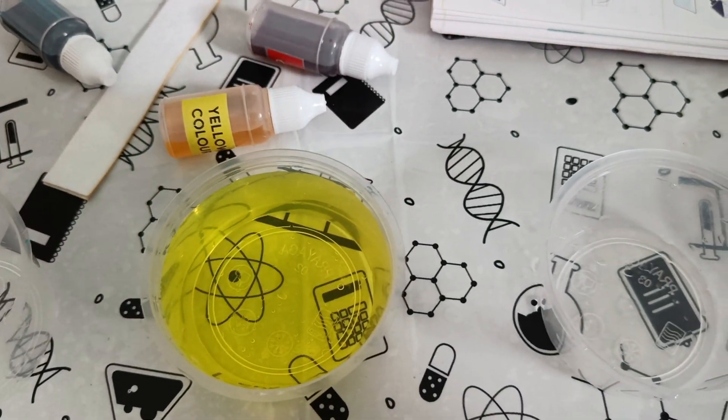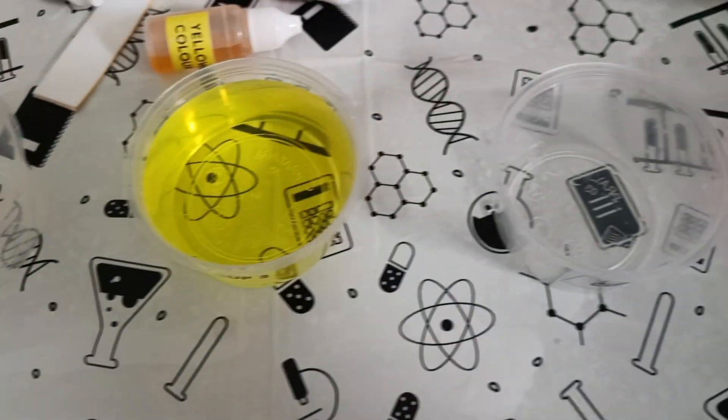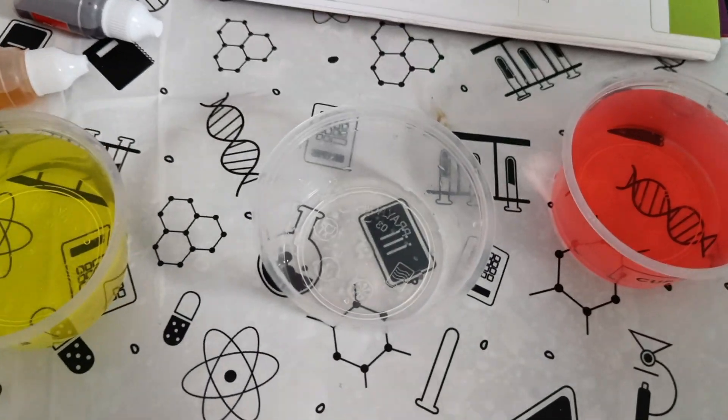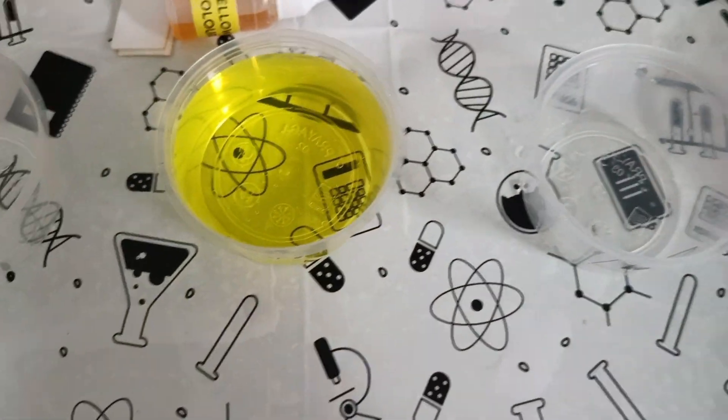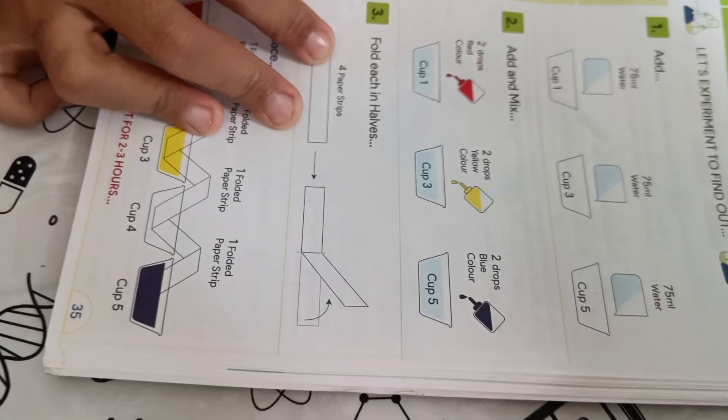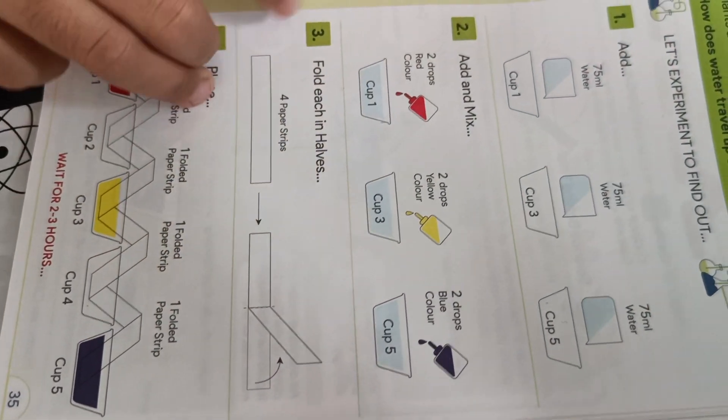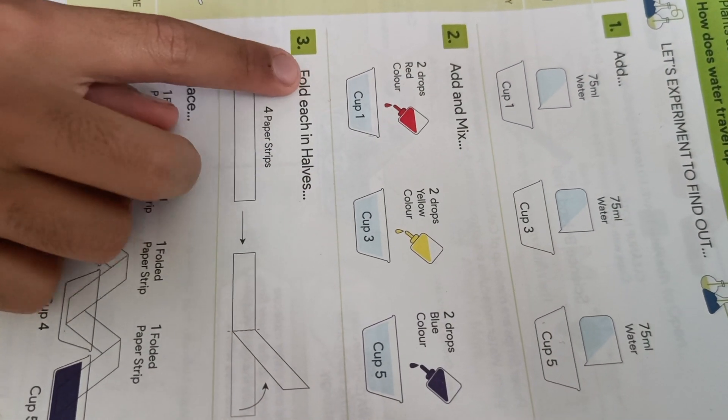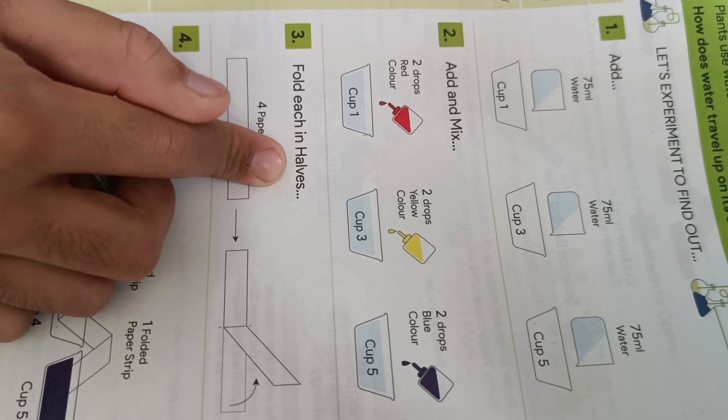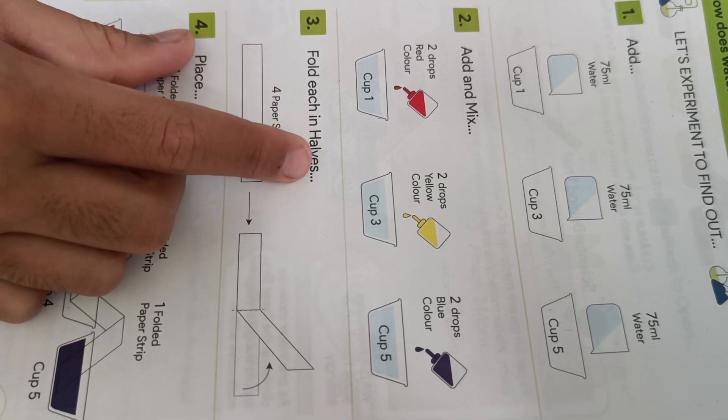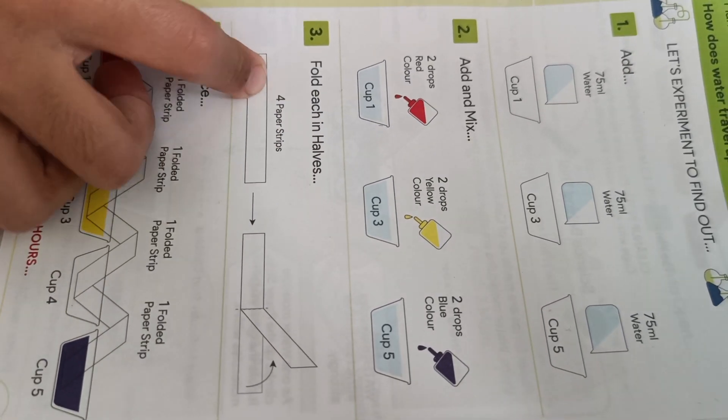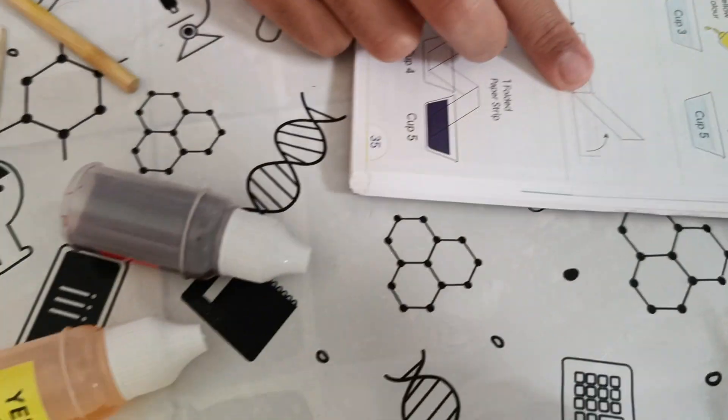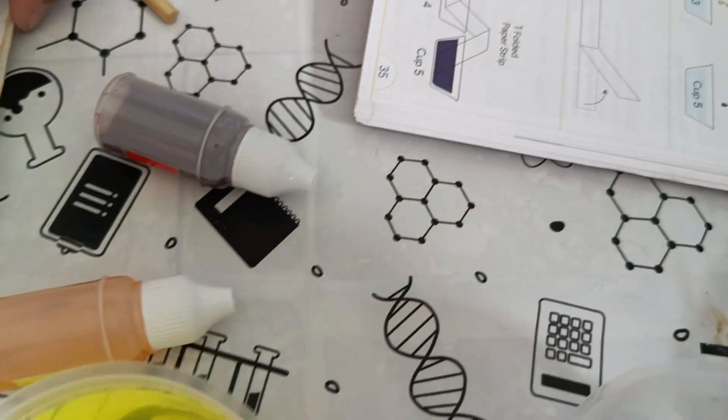After we mix all three of them, let us see what we have to do next. The third step: we have to fold each in halves, four paper strips. Like this, we have to fold it.